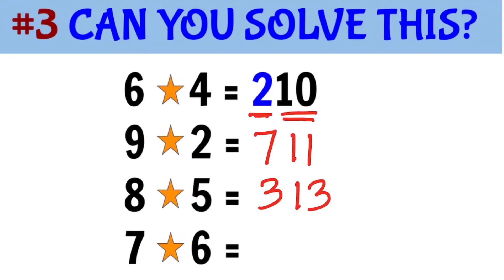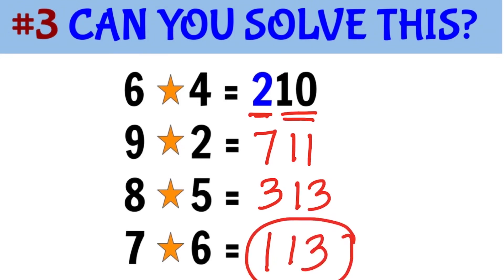And the question is 7 star 6. The difference is 1 and the sum is 13, so the answer for question number 3 is 113. Did you get the same answer?